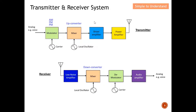This diagram here shows both the transmitter and receiver system. Let's focus on the transmitter first. The modulating signal — also called the intelligent signal or baseband signal — is the signal we want to send to the receiver. For example, I want to send my voice over to the receiver. The carrier will help carry the modulating signal over to the receiver.